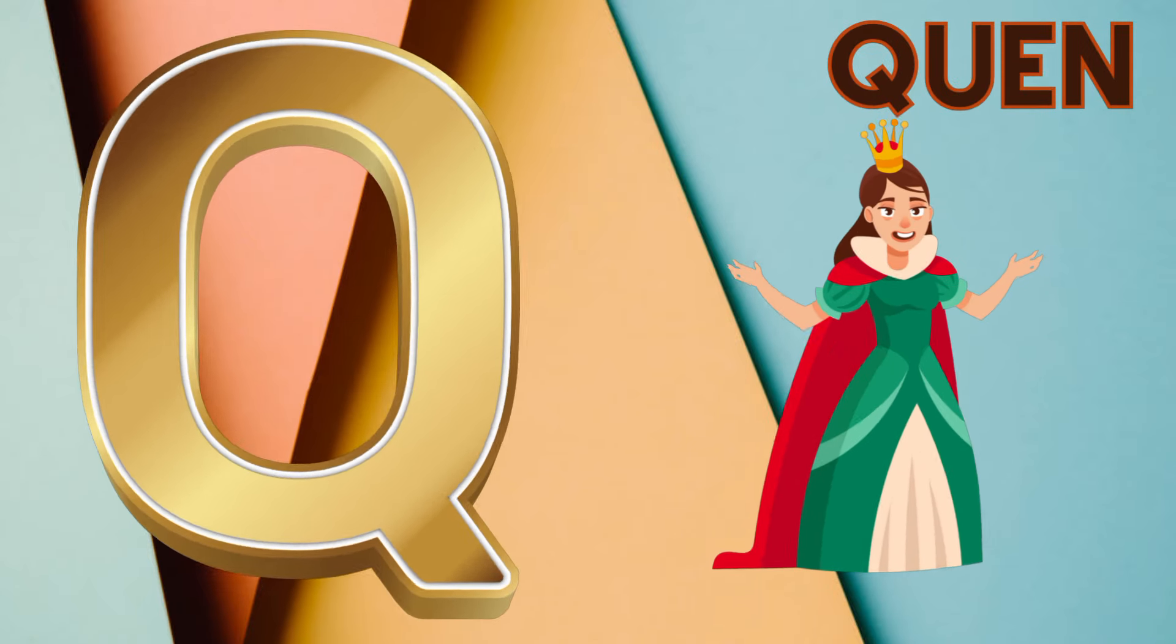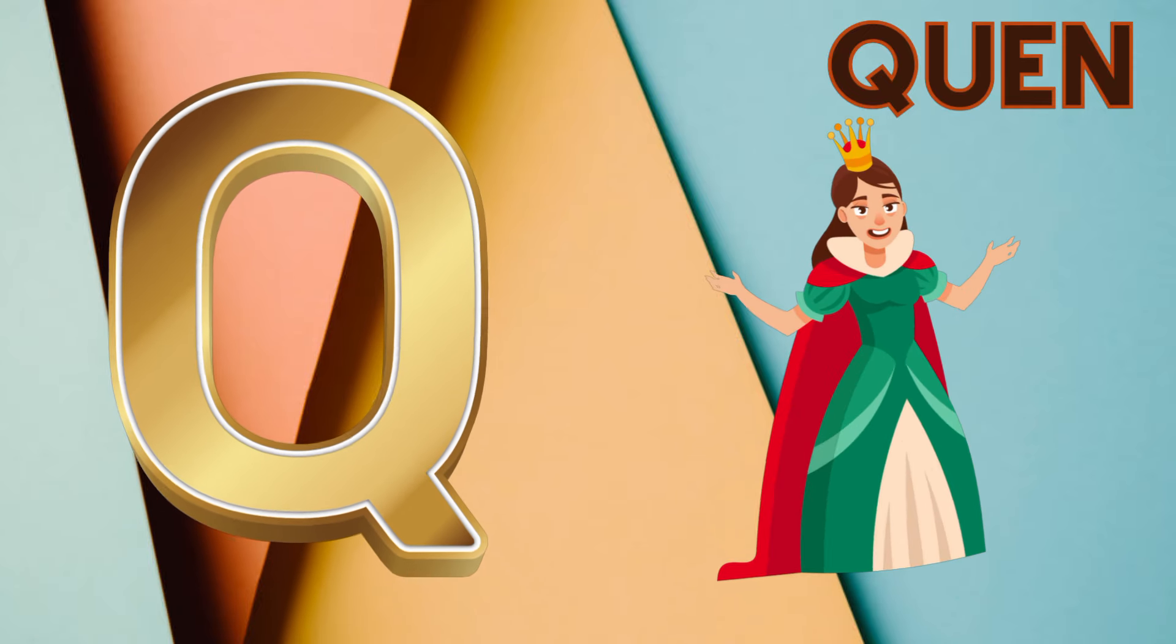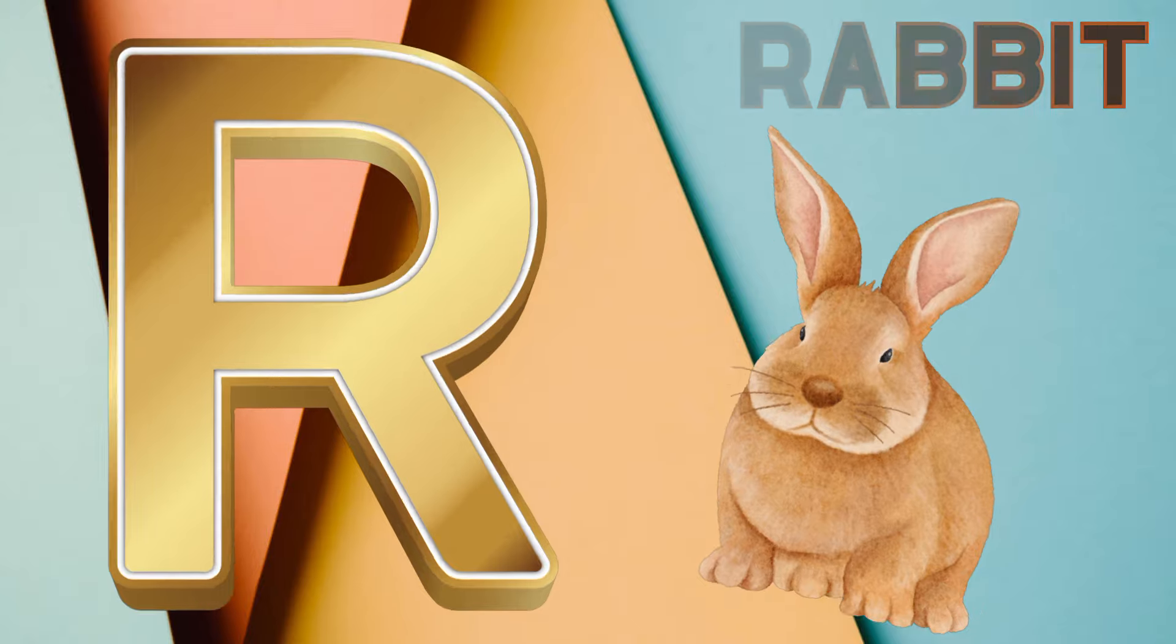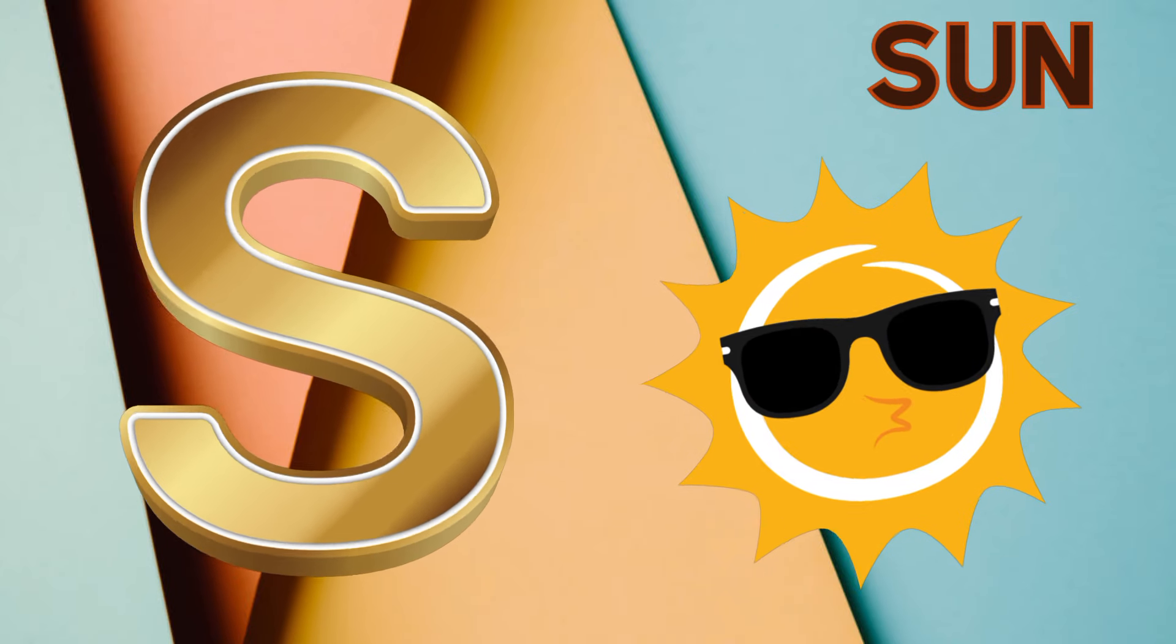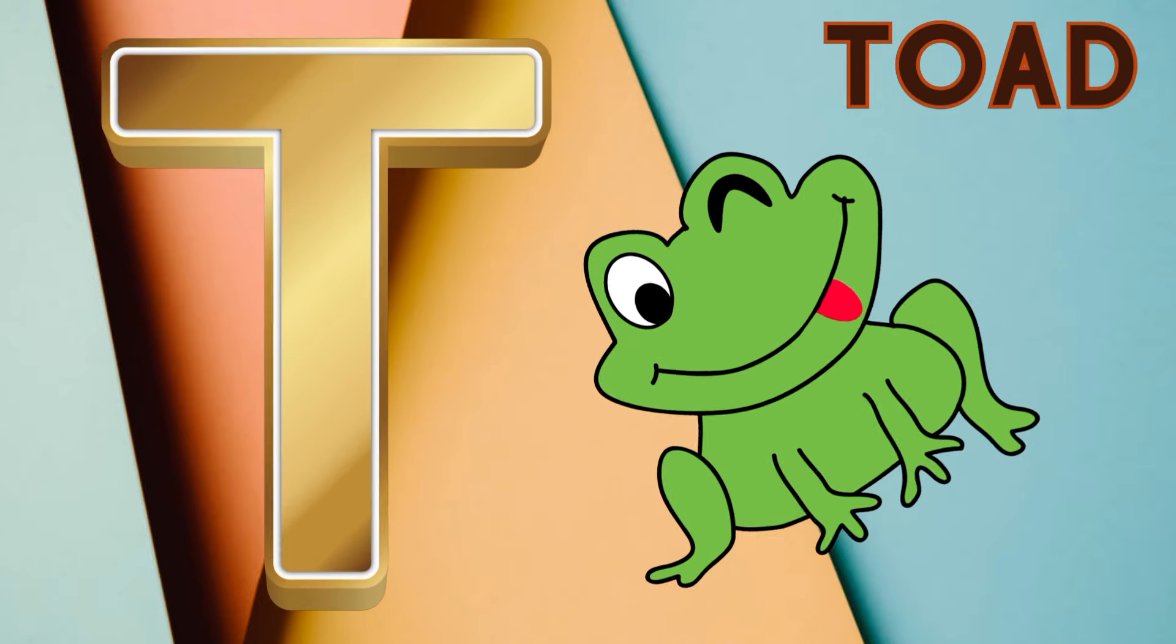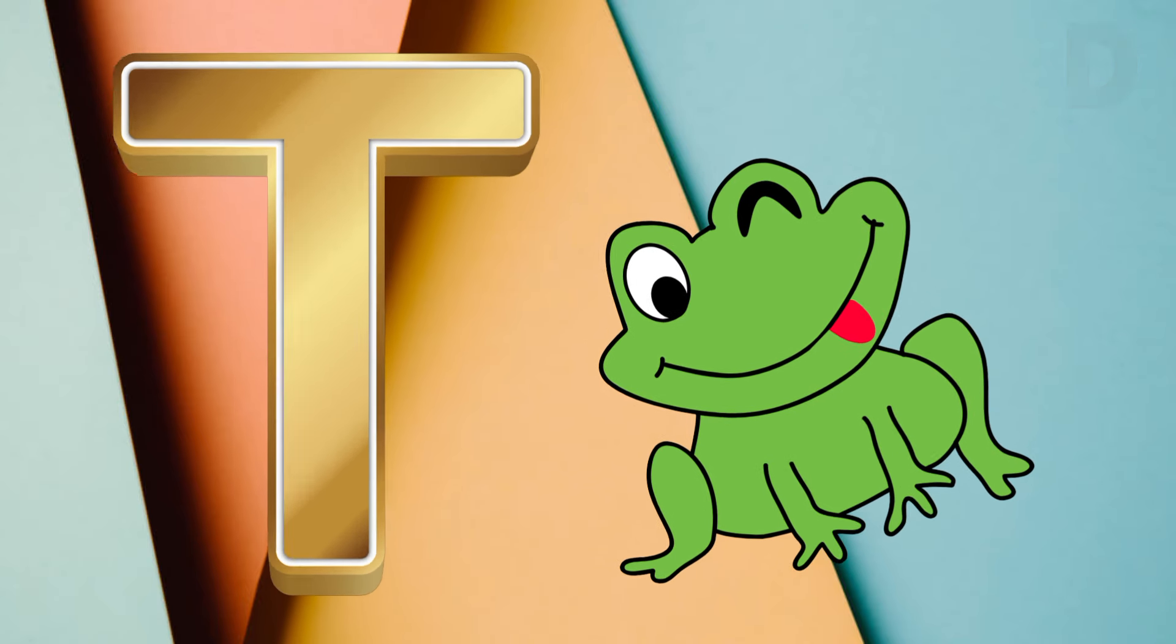Q is for queen, k-k-queen. R is for rabbit, r-r-rabbit. S is for sun, s-s-sun. T is for toad, t-t-toad.